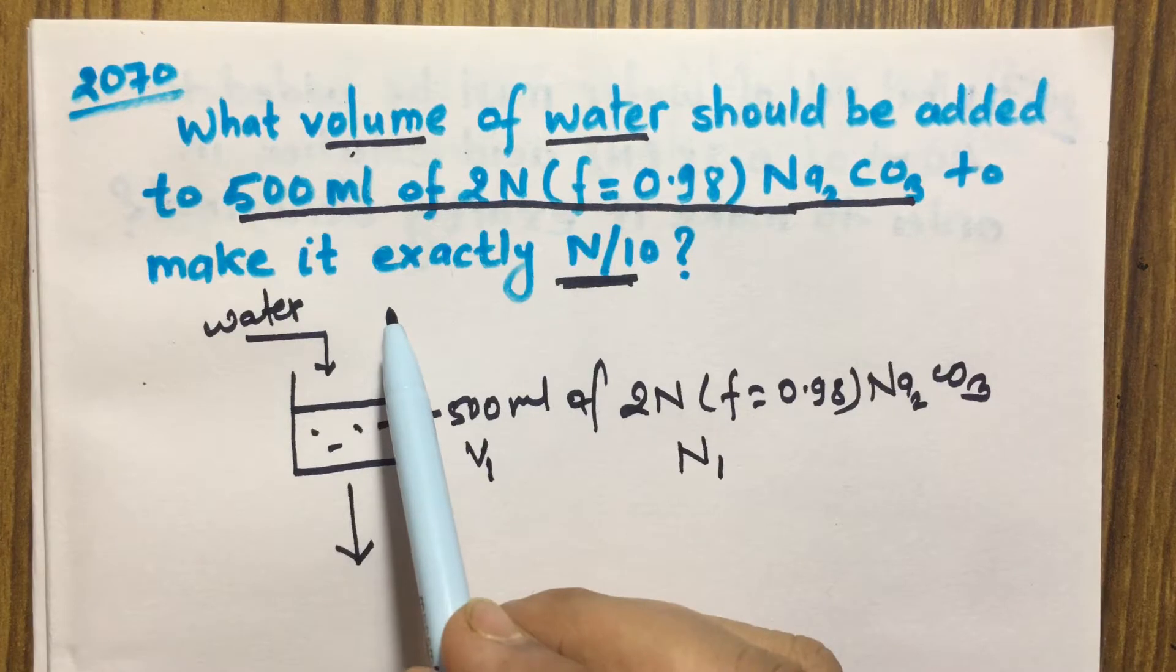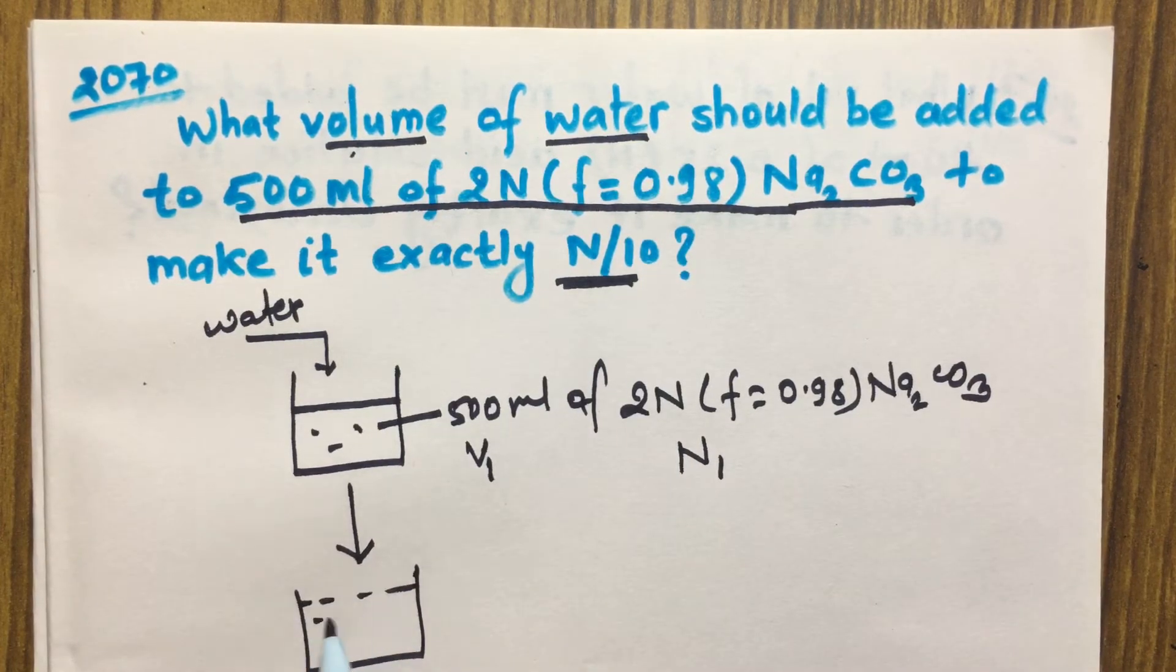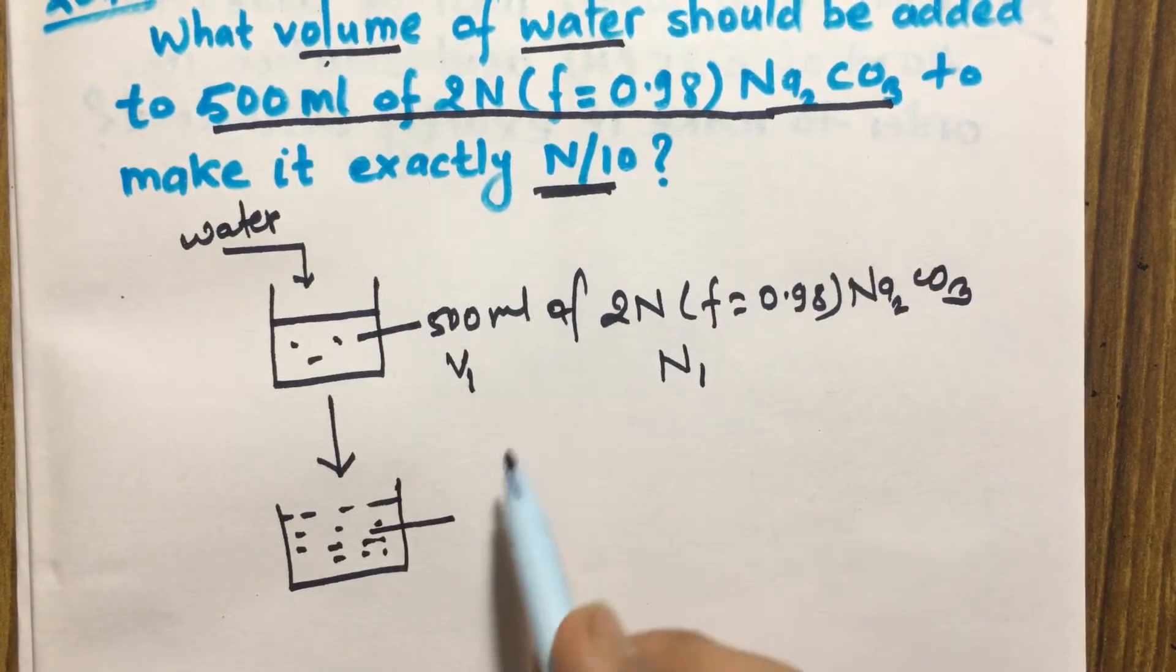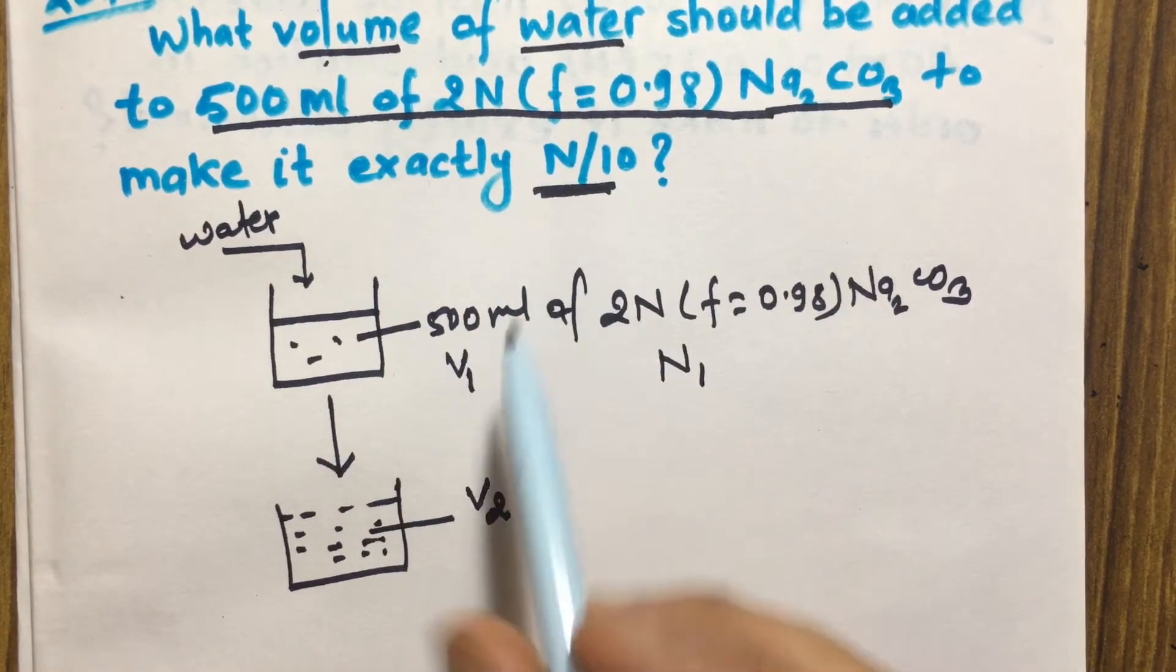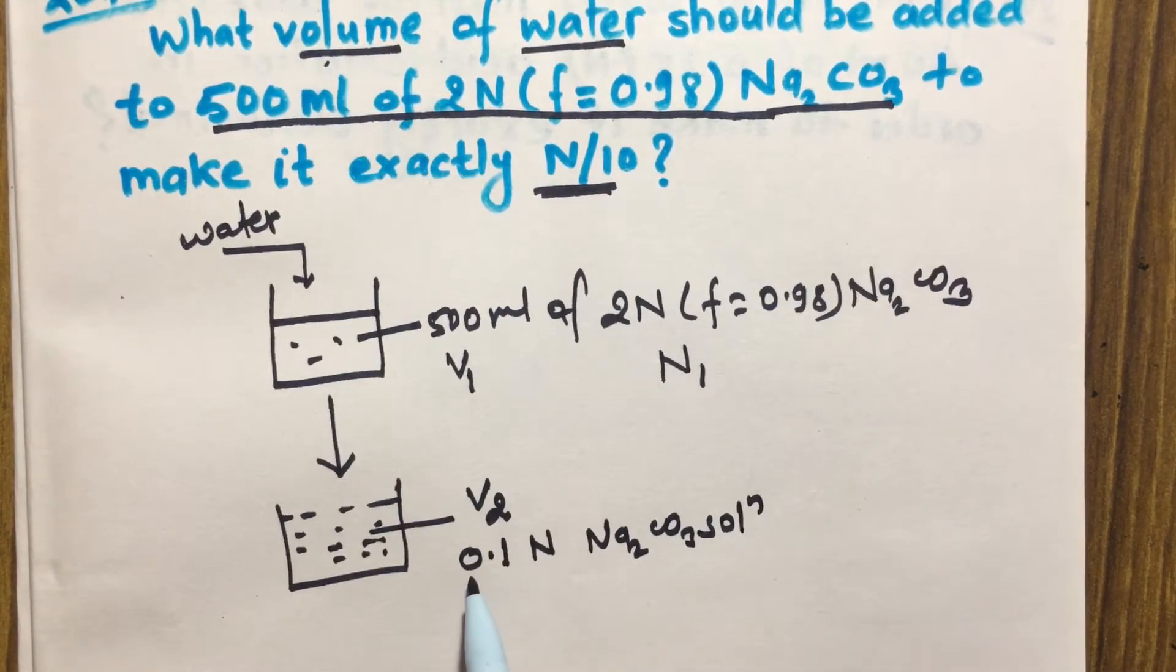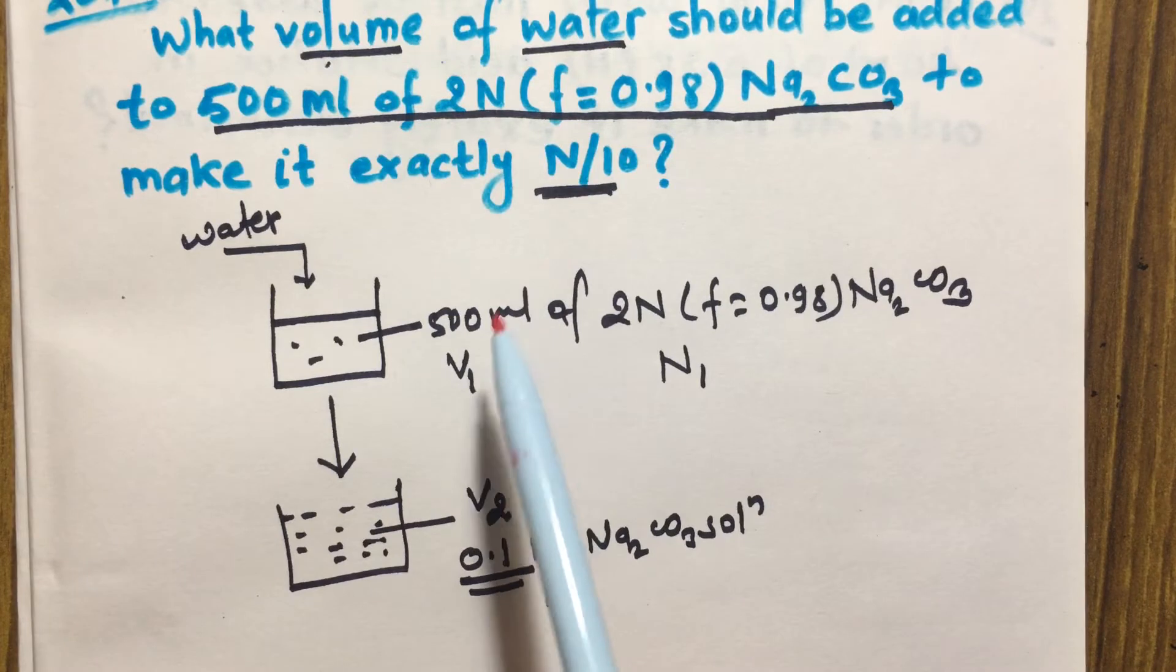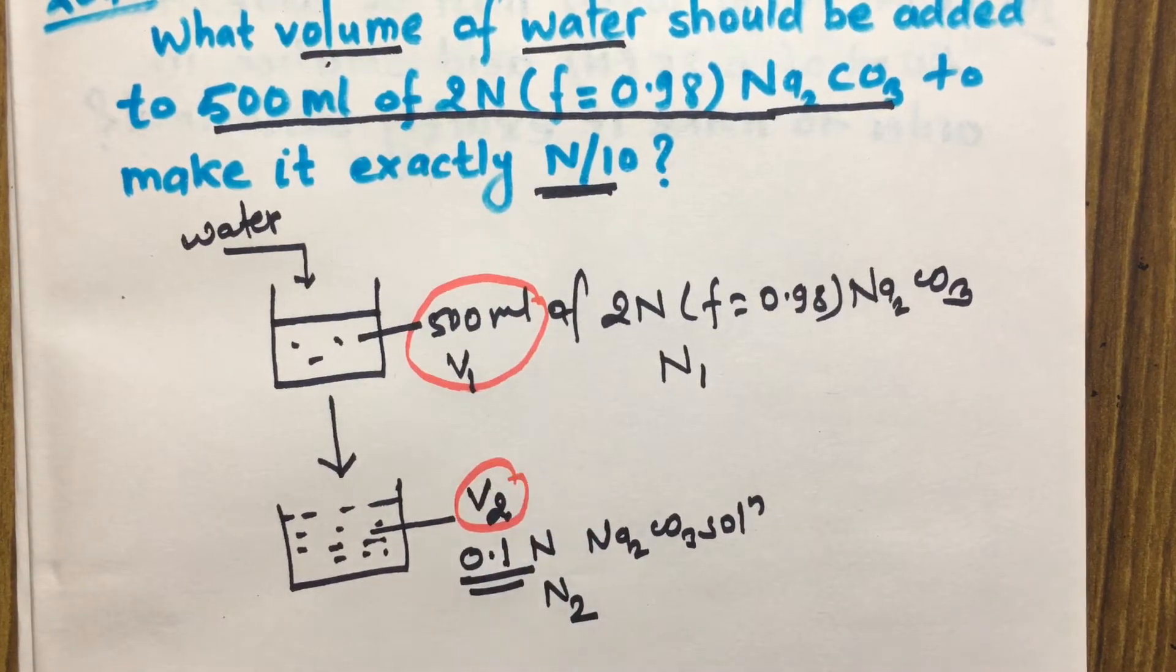After adding water, this concentration of 2N is made to be 0.1 normal. So the volume of this solution must be increased. Suppose its volume becomes V₂ and its concentration is 0.1 normal sodium carbonate solution, so here this is N₂.